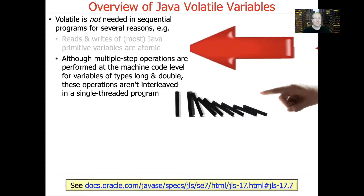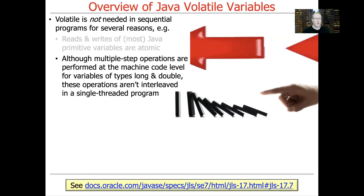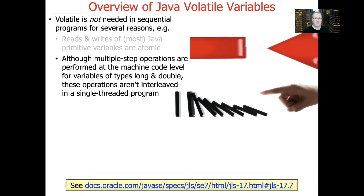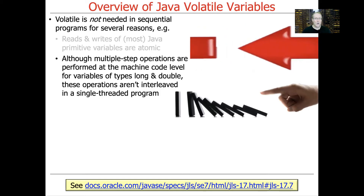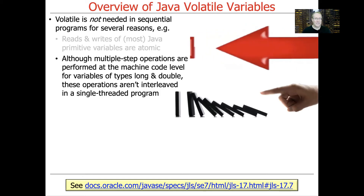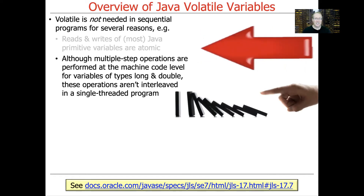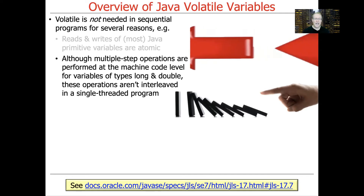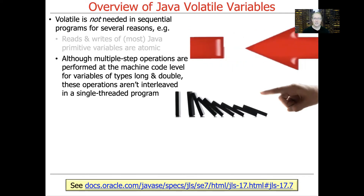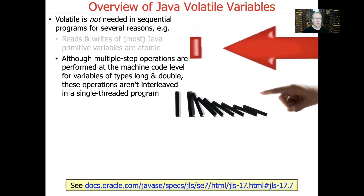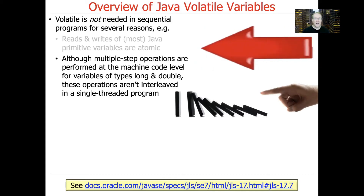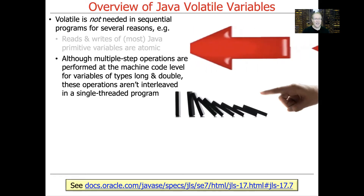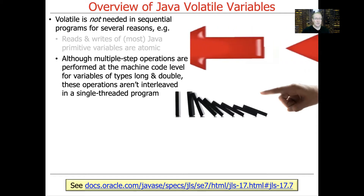If you're dealing with other types like longs and doubles, which on some instruction sets and bus sizes will require multiple reads or writes at the bus level, you're still fine in a single-threaded program because the operations will never be interleaved. Even if you're writing a long — a 64-bit quantity — on a 32-bit bus, even though two operations are required, you're still fine because there's nothing else trying to interleave or compete; there's only one thread.